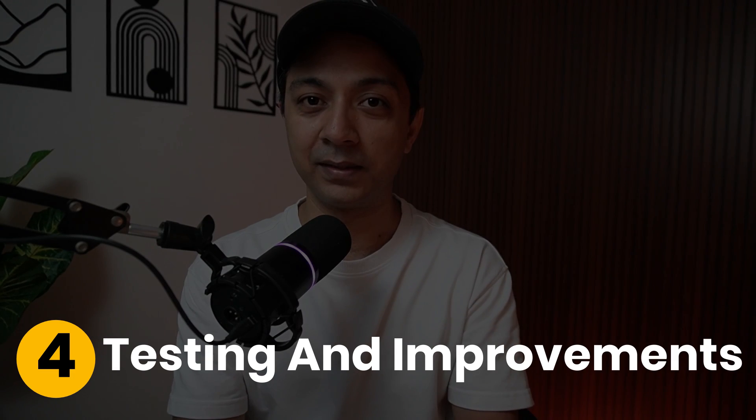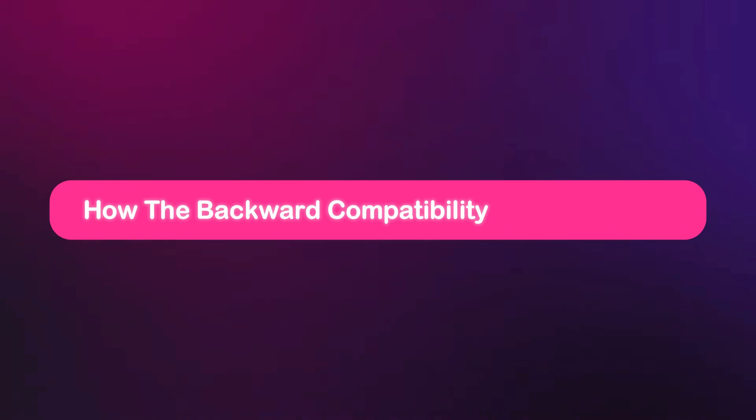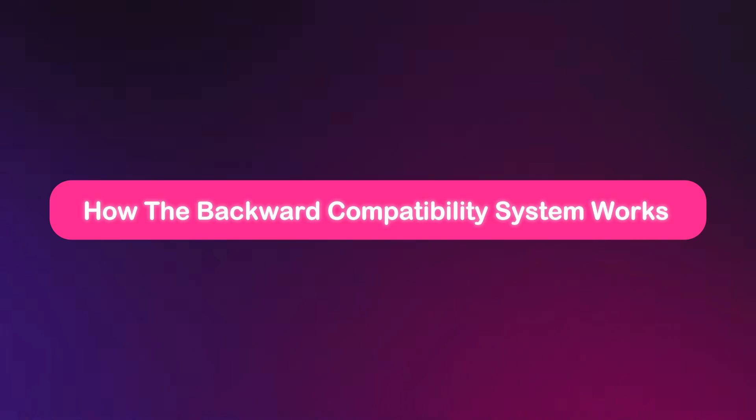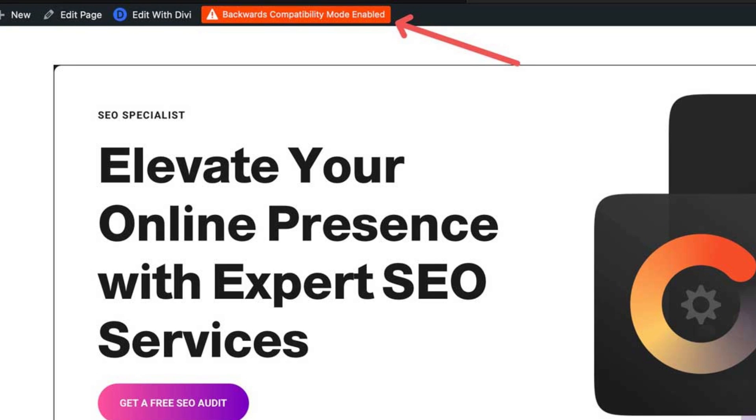Then comes testing and improvements. We have put tons of top Divi marketplace products to the test to ensure they play nice with DV5. We are keeping the feedback loop open with our community to tweak and perfect things during the upcoming beta phase. When you open a DV4 site in DV5, the system scans for legacy modules and plugins and switches to backward compatibility mode if needed. You can still edit everything in the Visual Builder — you might notice small quirks like an Ajax reload here and there. A little red notice pops up in the admin bar to let you know what's running in legacy mode.